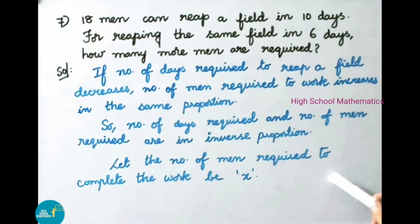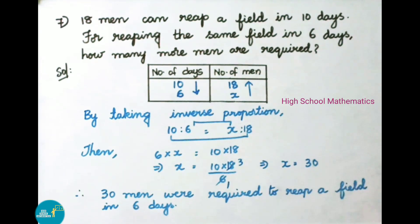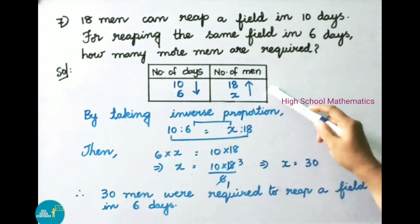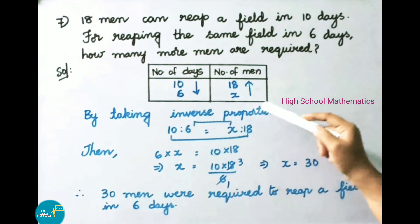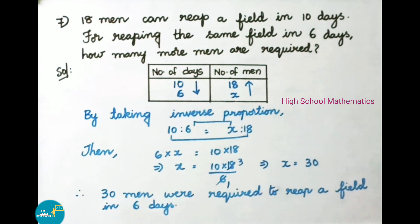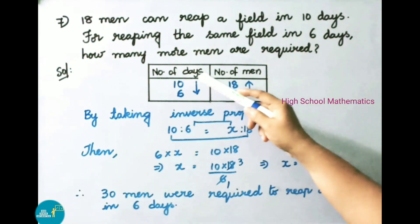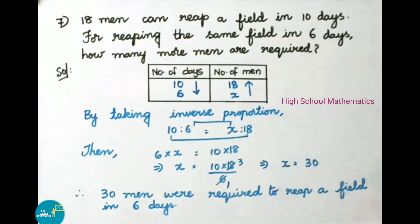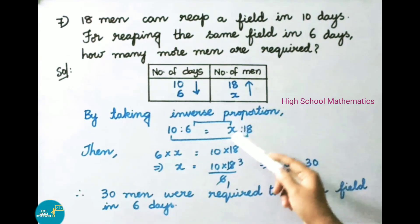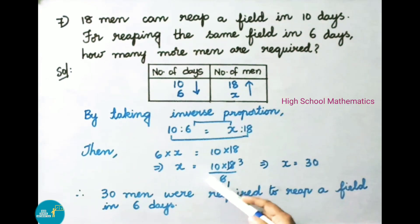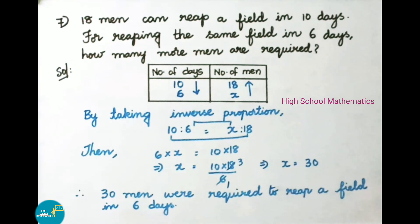Let the number of men required to complete the work be X. See the table now — number of days and number of men. To reap a field in 10 days, 18 men were required. To reap a field in 6 days, how many men are required — we are going to find now. By taking inverse proportion: 10 is to 6 is equal to X is to 18. We know product of means is equal to product of extremes. Then 6 into X is equal to 10 into 18. That implies X is equal to 10 into 18 by 6. Simplifying: 6 goes into 18 three times, so X is equal to 10 into 3, that is 30. Therefore, X value is 30.